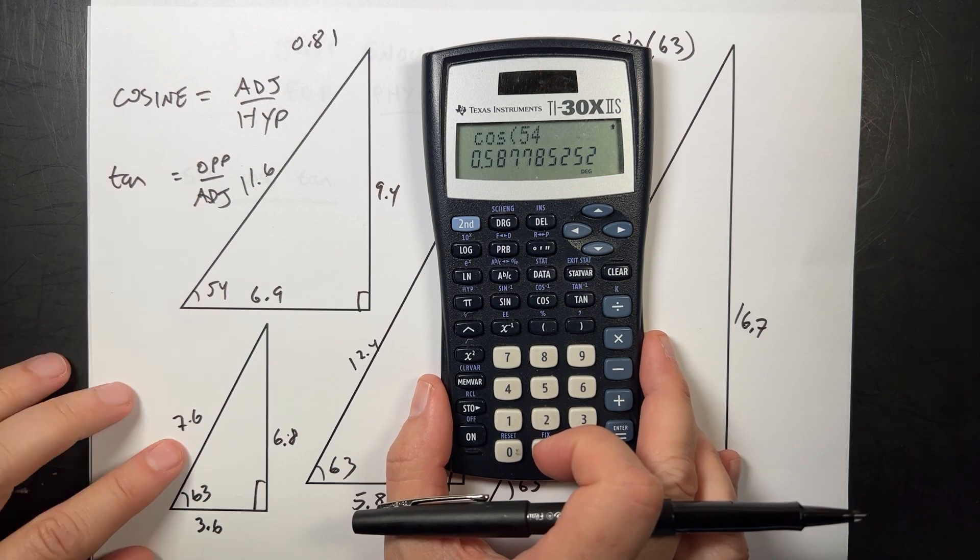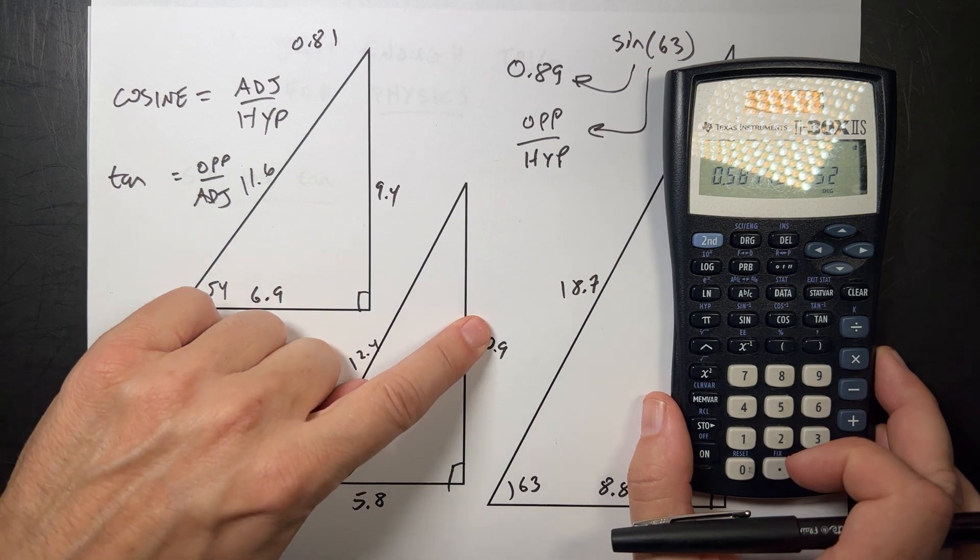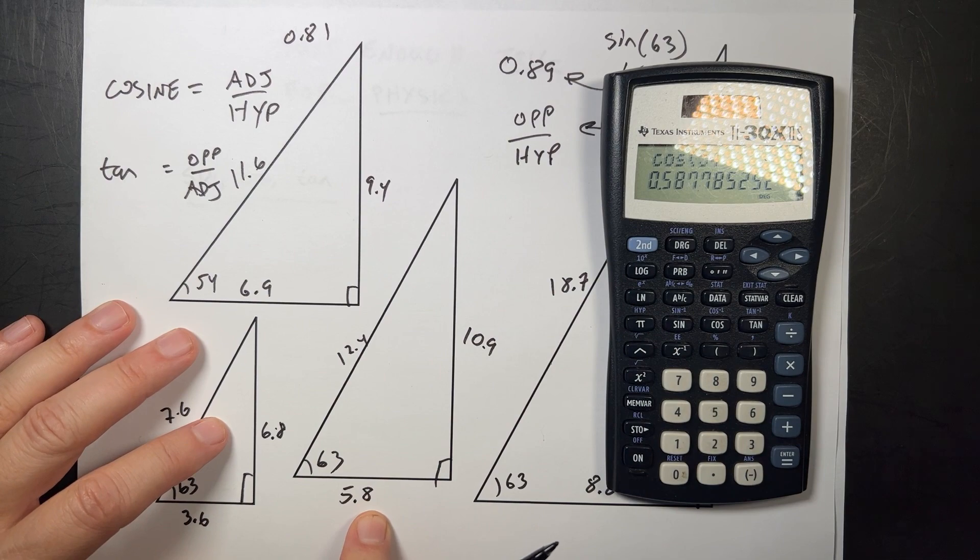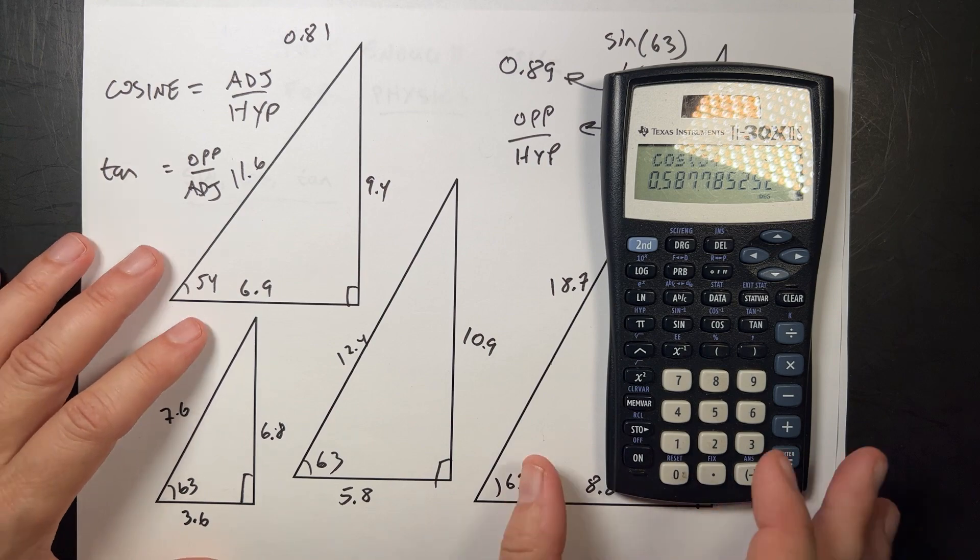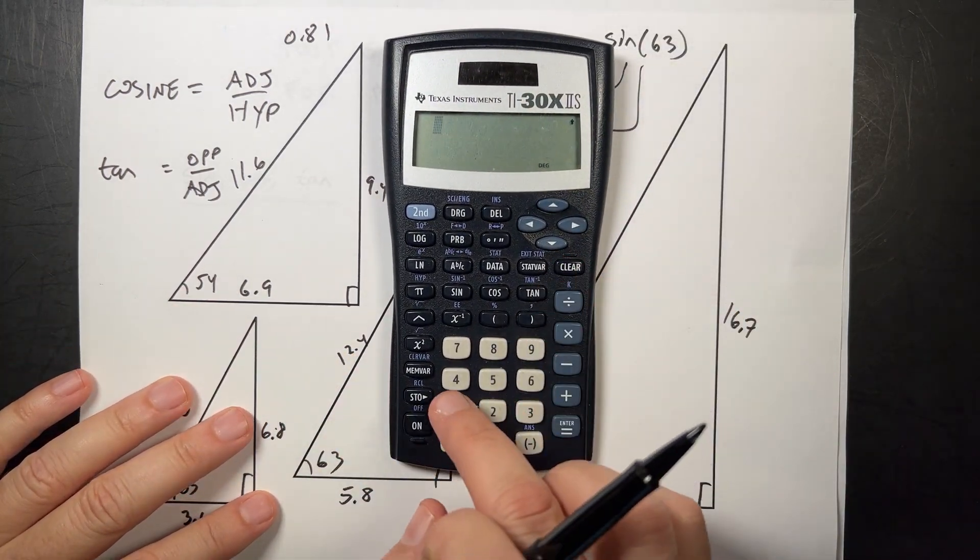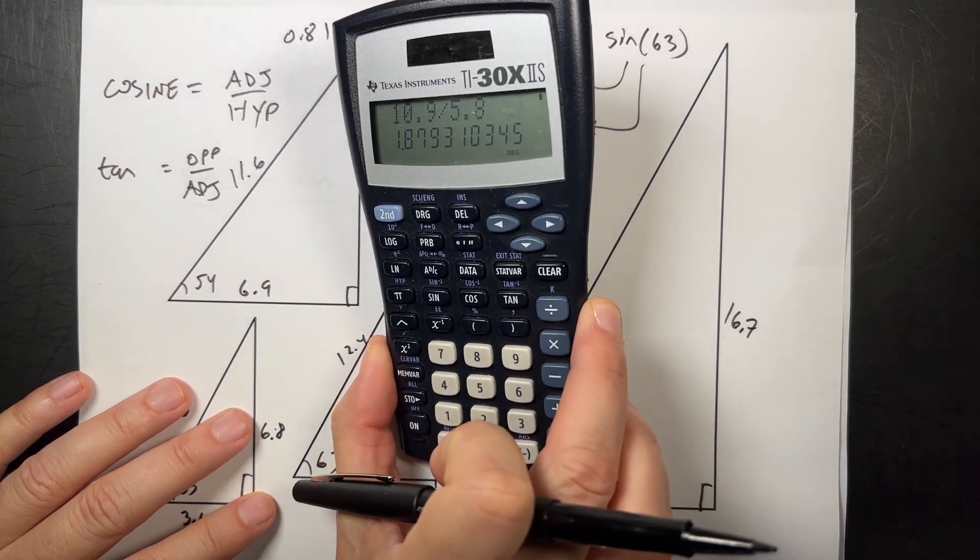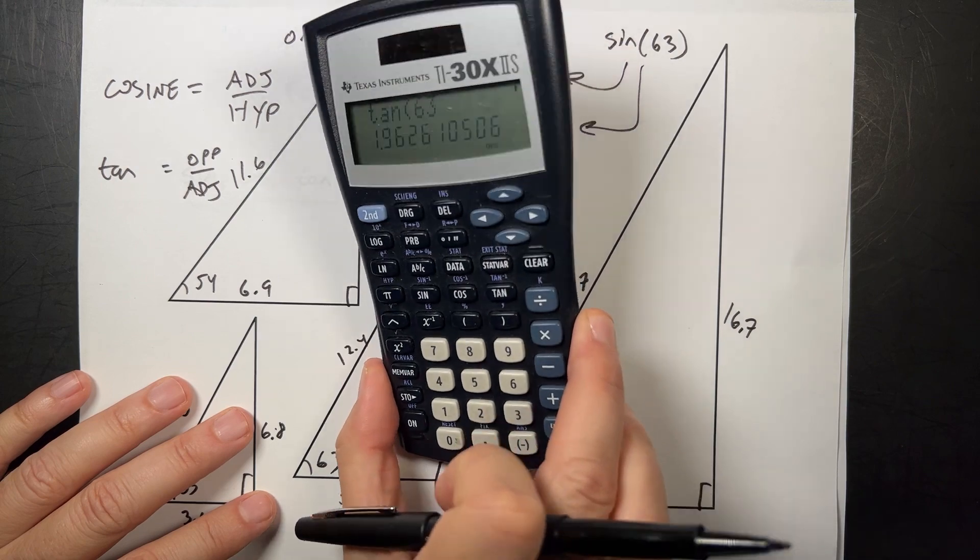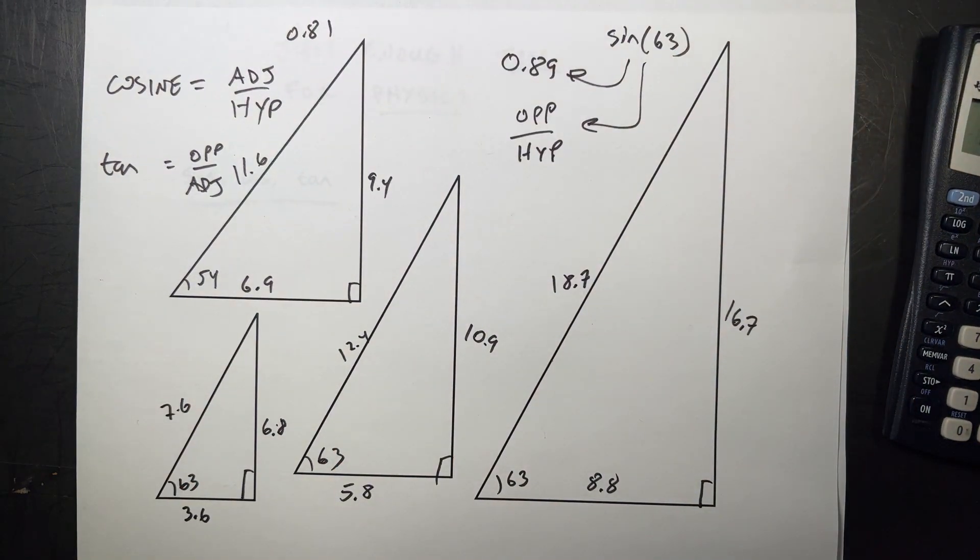Now let's try tangent, just to be fun. We'll use this triangle right here. Opposite divided by the adjacent. Now you notice that this one can be greater than 1. Cosine cannot, sine cannot, but because they're ratios of sides to a right triangle. So this one I have 10.9 divided by 5.8, equals 1.88. And then if I do tangent of 63, 1.9. That's a little bit off, but because of my measurements.